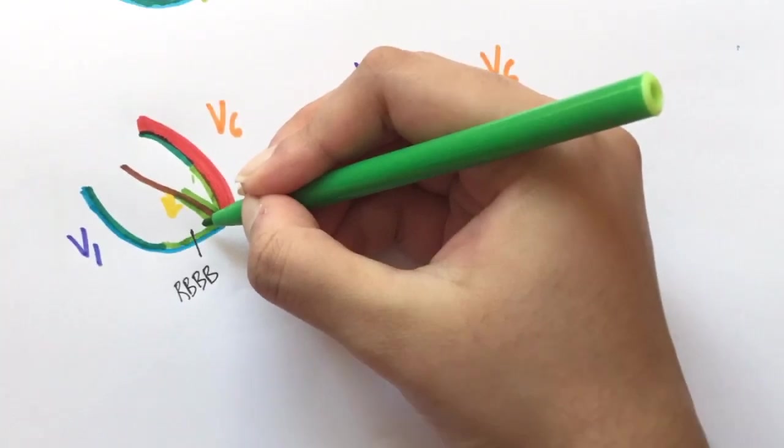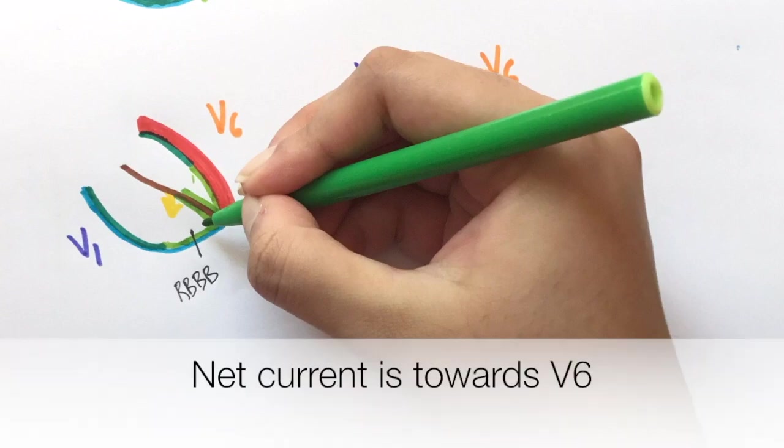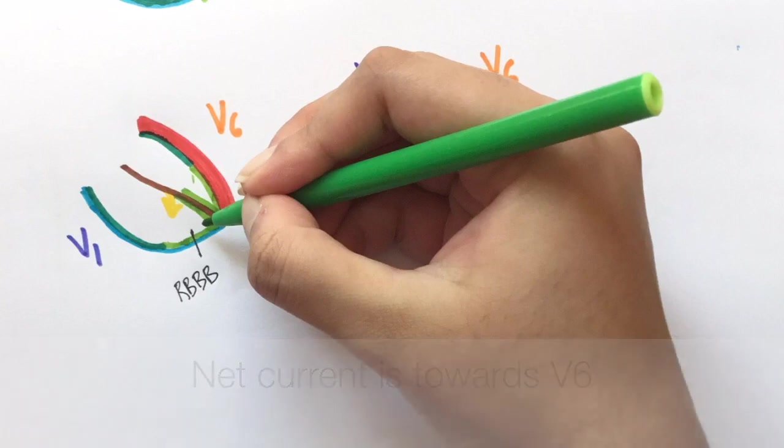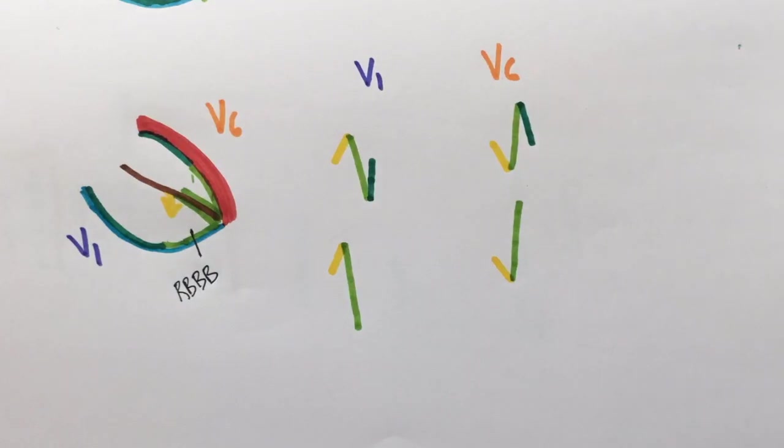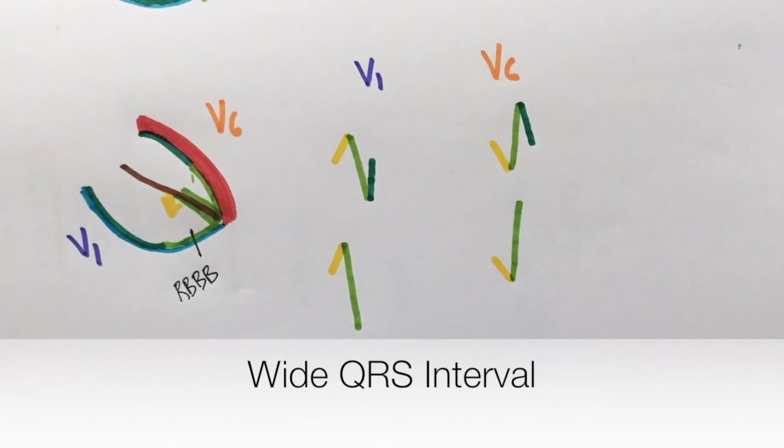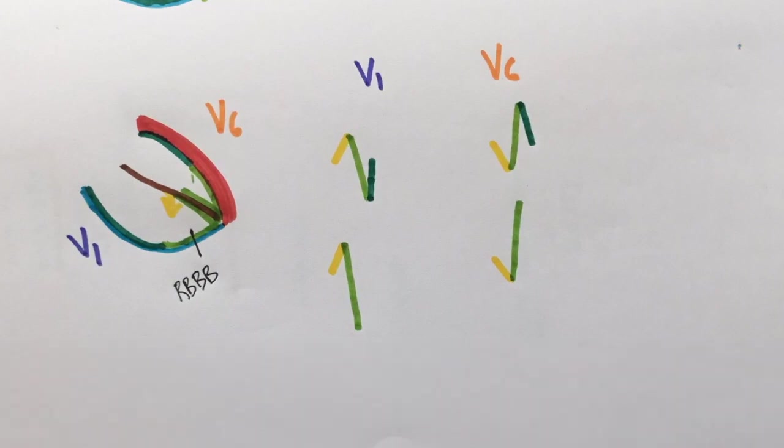The impulses will slow down on the right side. Since the left ventricle is thicker than the right, the net current is towards V6. So there is a negative deflection in V1 and a positive deflection in V6. Due to the block, the duration will be longer. So the QRS interval is wider in case of right bundle branch block.